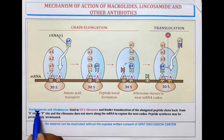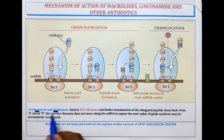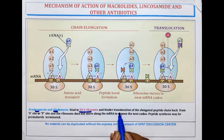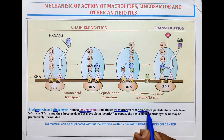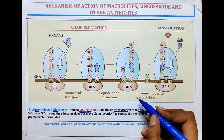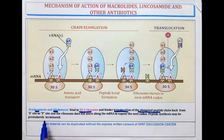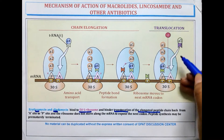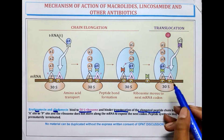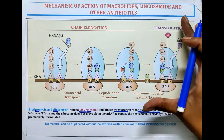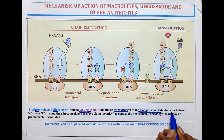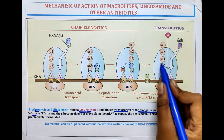We are going to discuss about Erythromycin. The mechanism of action of these two drugs — Clindamycin and Erythromycin — is that they bind to the 50S ribosome subunit and hinder the translocation of the elongated peptide chain, inhibiting the movement of amino acids from the P site to the A site.